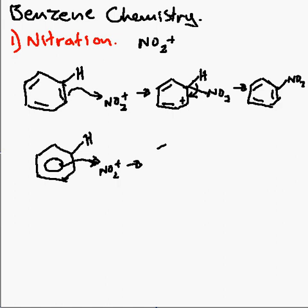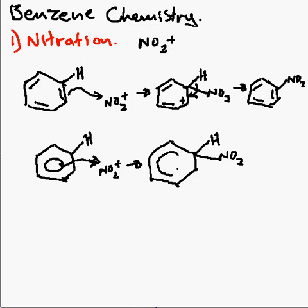And this gives us an intermediate which, depending how lenient your marker is, they may or may not mark you down for the exact location of how this circle changes. What you actually want is an imaginary line between that carbon there and the opposite side, which is why I did the Kekulé version first — to let you actually know where the positive charge really is. And that is where you break the circle and insert your positive charge.